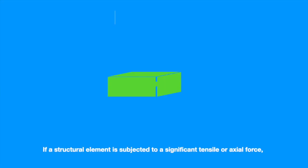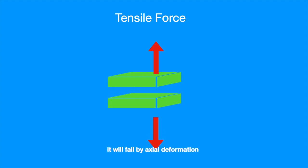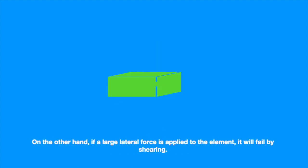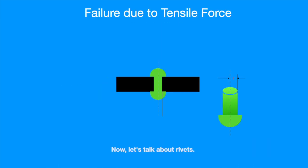If a structural element is subjected to a significant tensile or axial force, it will fail by axial deformation. On the other hand, if a large lateral force is applied to the element, it will fail by shearing. Now let's talk about rivets.